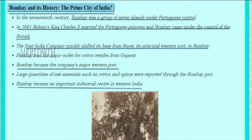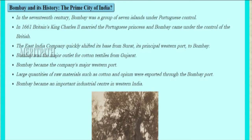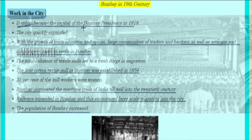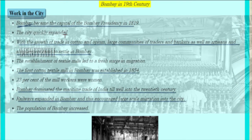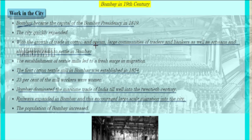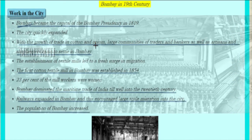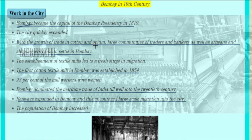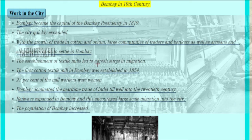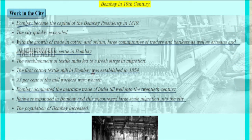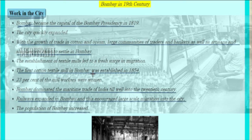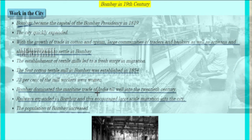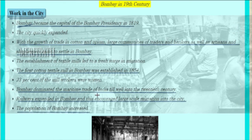Bombay became an important industrial center in western India. It became the capital of Bombay Presidency in the year 1819. The city quickly expanded. With the growth of trade in cotton and opium, large communities of traders, bankers, artisans, and shopkeepers came to settle in Bombay. The establishment of textile mills led to a fresh surge in migration. The first textile mill in Bombay was established in 1854, and 23% of the mill workers were women. Bombay dominated the maritime trade of India well into the 20th century.